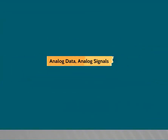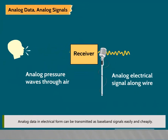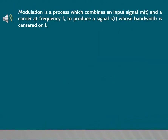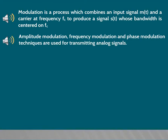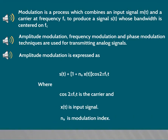Analog data in electrical form can be transmitted as baseband signals easily and cheaply. Modulation is a process which combines an input signal M(t) and a carrier at frequency Fc to produce a signal S(t) whose bandwidth is centered on Fc. Amplitude modulation, frequency modulation, and phase modulation techniques are used for transmitting analog signals. Amplitude modulation is expressed as: S(t) = [1 + Na * X(t)] * cos(2πFcT), where cos(2πFcT) is the carrier, X(t) is the input signal, and Na is the modulation index.